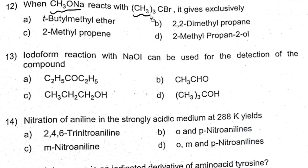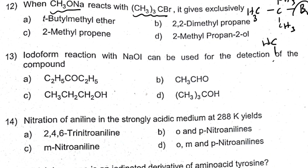When CH₃C(CH₃)₂CBr reacts with sodium ethoxide — sodium ethoxide is a strong base, less nucleophilic, so under these conditions it will undergo an elimination reaction. The Br is eliminated, forming a carbocation, and then a hydrogen is removed to give 2-methylpropene. 2-methylpropene is the answer.